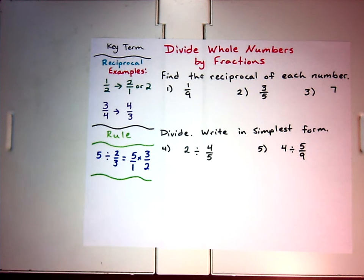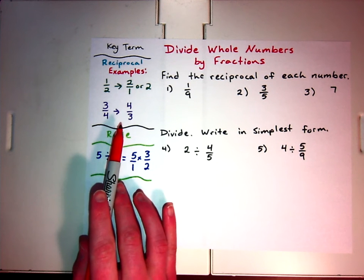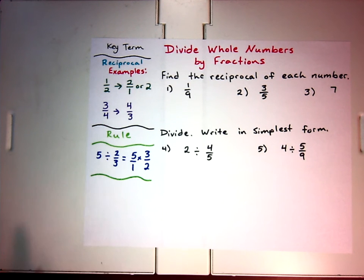Another interesting thing for reciprocals is that when you multiply reciprocals, the product will equal 1. So 1 half times 2 over 1 will equal the number 1, and that will come in handy in future lessons.